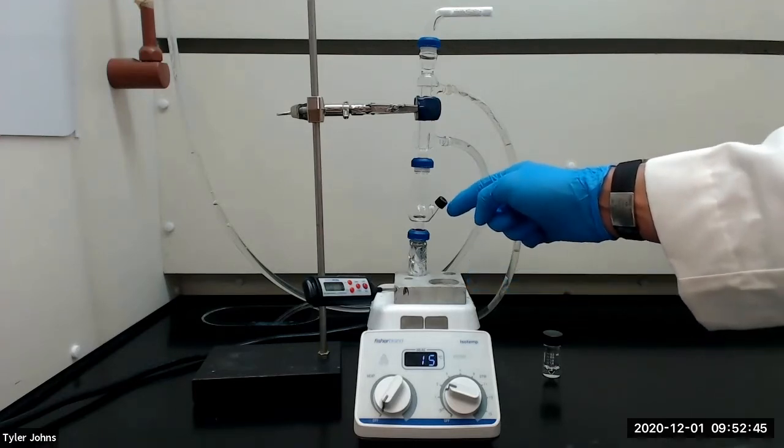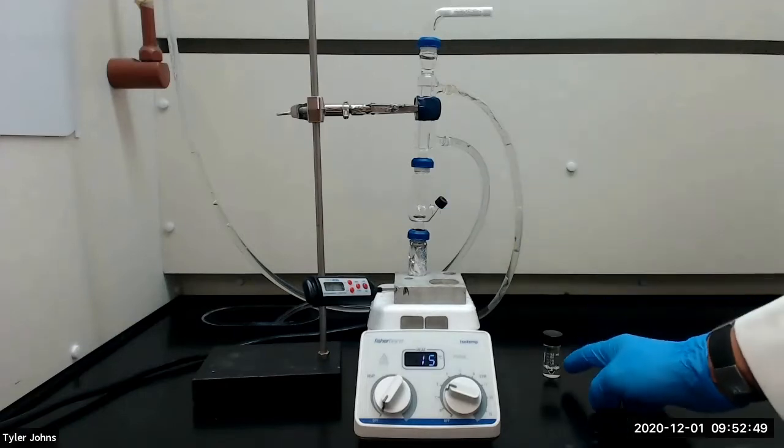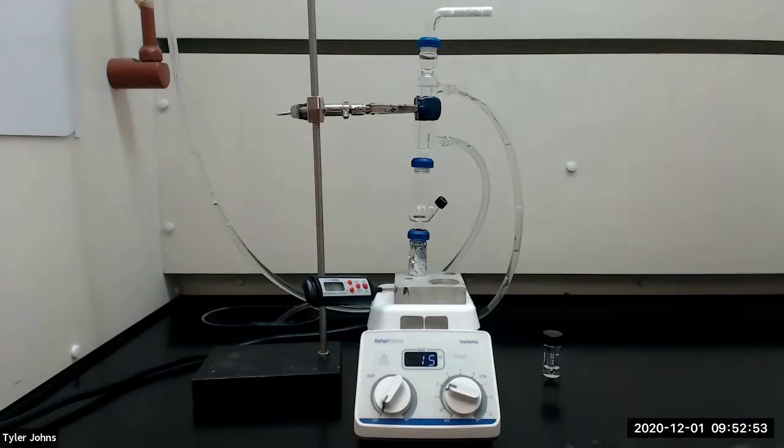We will collect the distillate from the side port of the Hickman head using a pasture pipette and transfer to a new 3-milliliter conical vial. We will continue the distillation until the product is no longer being distilled.